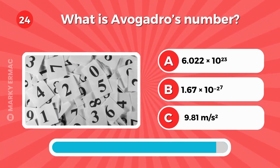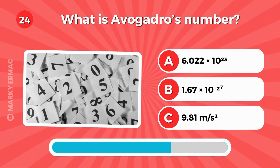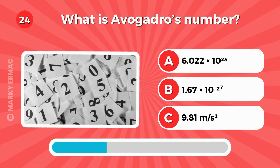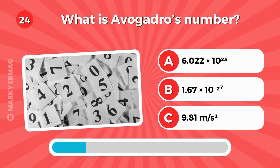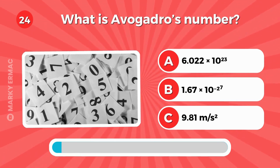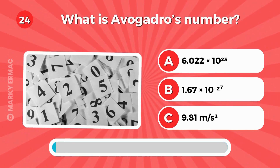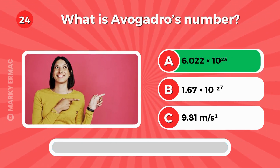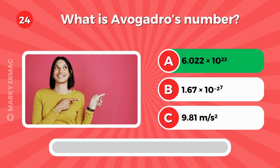What is Avogadro's number? It's letter A — 6.022 × 10²³.